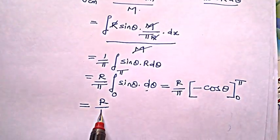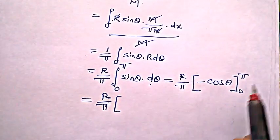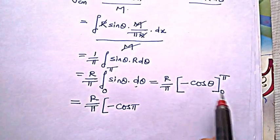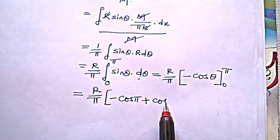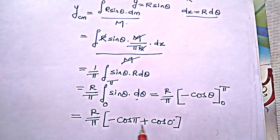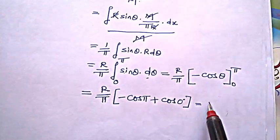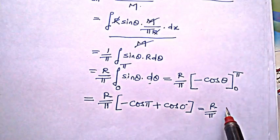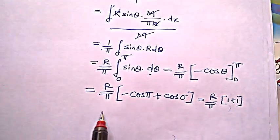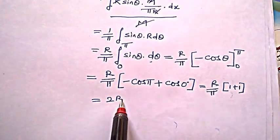So if I substitute the limits, I would get r by π into, substituting π first, minus cos π minus minus cos 0 degrees. Cos 0 is 1, cos π is minus 1, so 1 minus minus 1, it would be r by π into 1 plus 1, which is finally 2r by π.